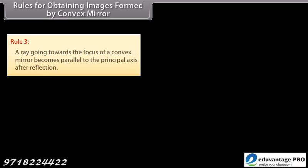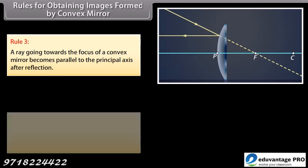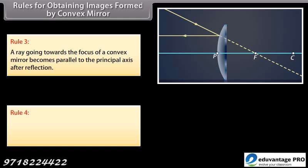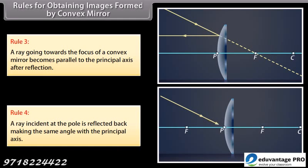Rule 3: a ray going towards the focus of a convex mirror becomes parallel to the principal axis after reflection. Rule 4: a ray incident at the pole is reflected back making the same angle with the principal axis.